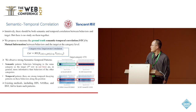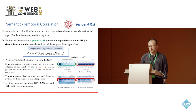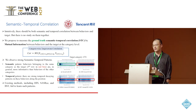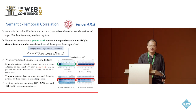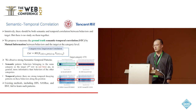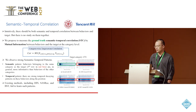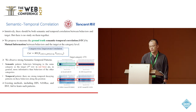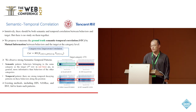Intuitively, there should be both semantic and temporal correlation between behaviors and the targets, but existing work mainly focuses on one of them and there's no study on them together. In this paper, we propose to measure the ground truth semantic temporal correlation between behaviors and the targets by the mutual information at the category level.